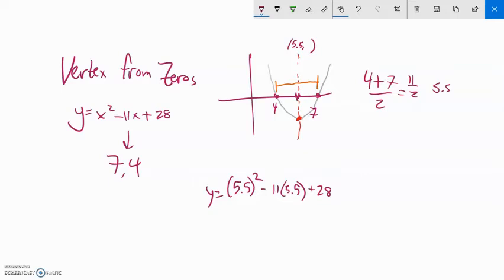And I get about negative 2.25. So notice from there then, I know the y part of it: negative 2.25. There's my vertex.